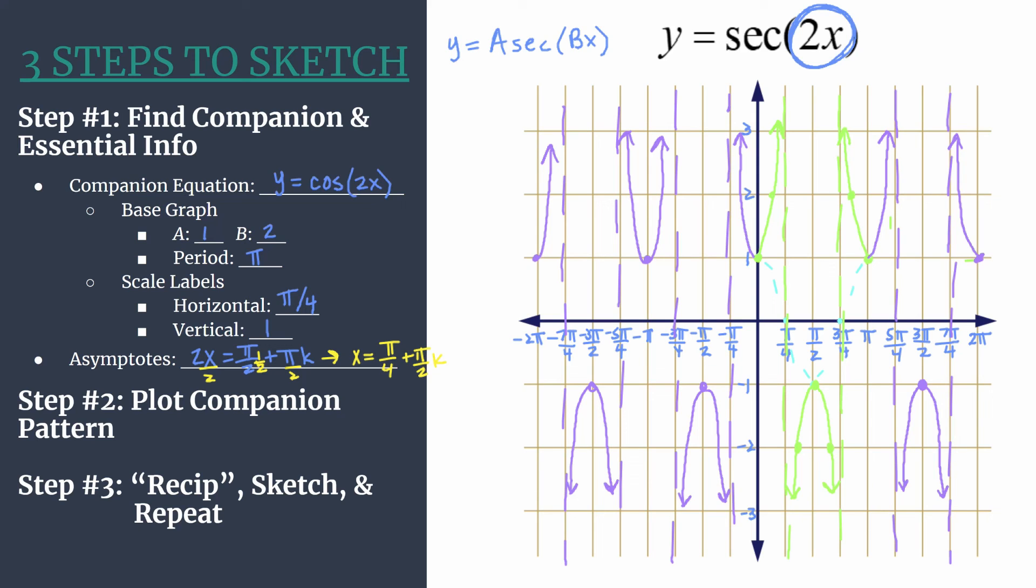And other neat things to look back at, particularly looking at b. We said that told us how many cycles happened between zero and 2π. That works for the companion equation, that cosine equation. But if you notice, it's easy to see starting from zero going to 2π.